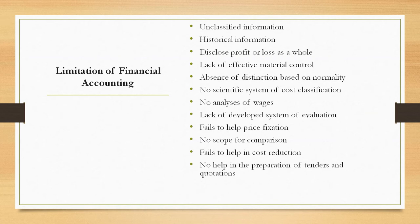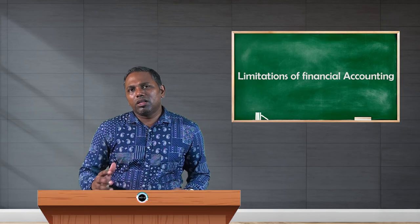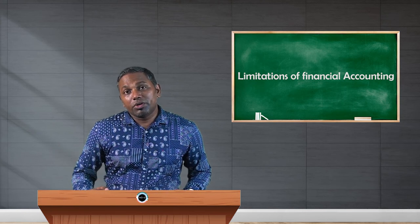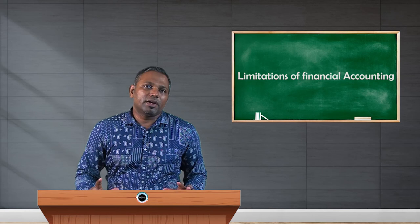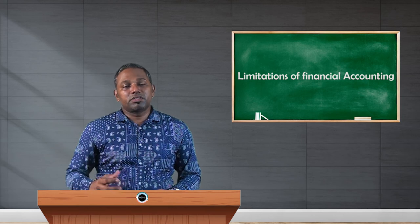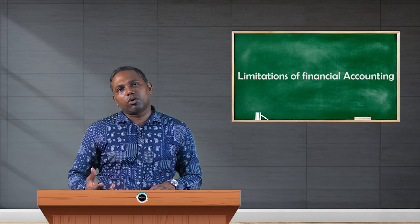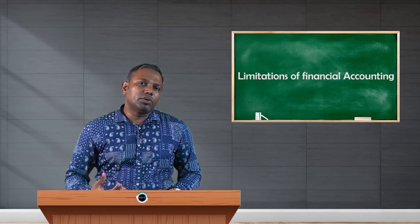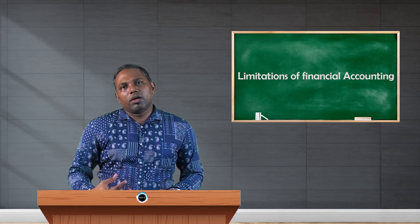There is also a lack of a developed evaluation system. Financial accounting fails to help management fix the price of a product, and there is no scope for comparing product profitability or loss. It also fails to help management reduce costs and does not provide information related to tenders and quotations. These limitations mean financial accounting fails to provide data for management to take proper decisions.